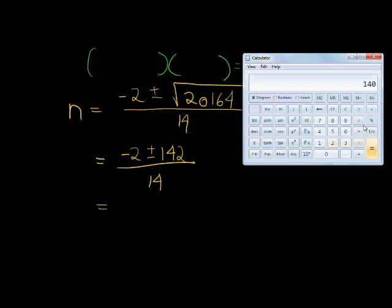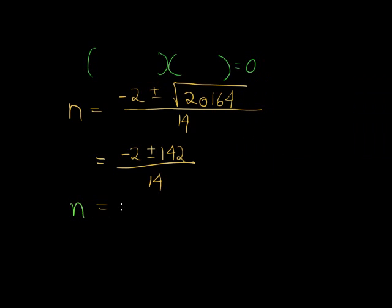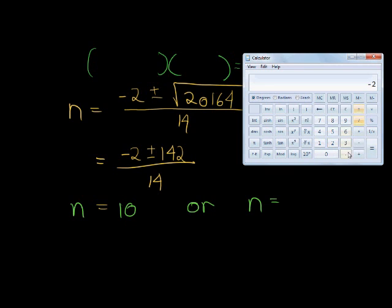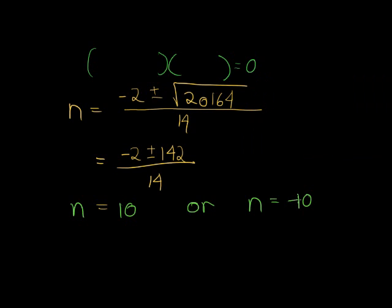Let's see what's that equal to. 140 minus 2 is equal to 138 divided by 14. It's either equal to 10, either n is equal to 10, or n is equal to negative 2 minus 142 divided by 14, oh negative 10.285714 and it goes on.